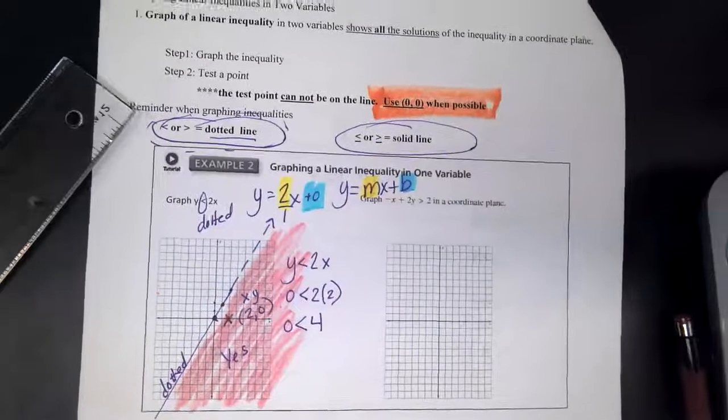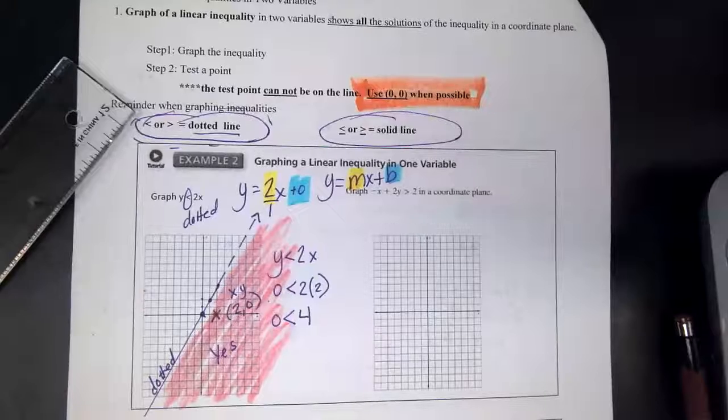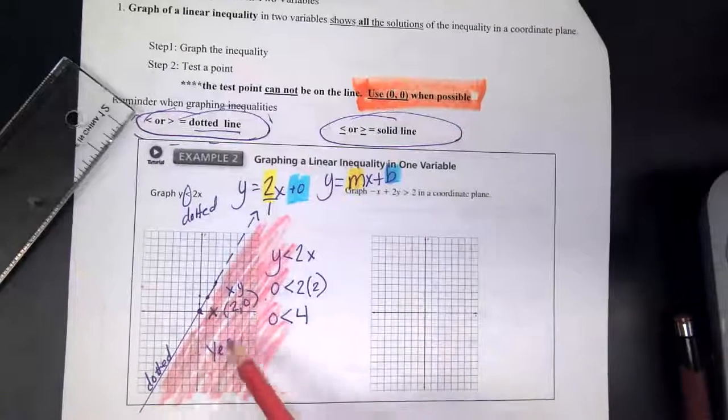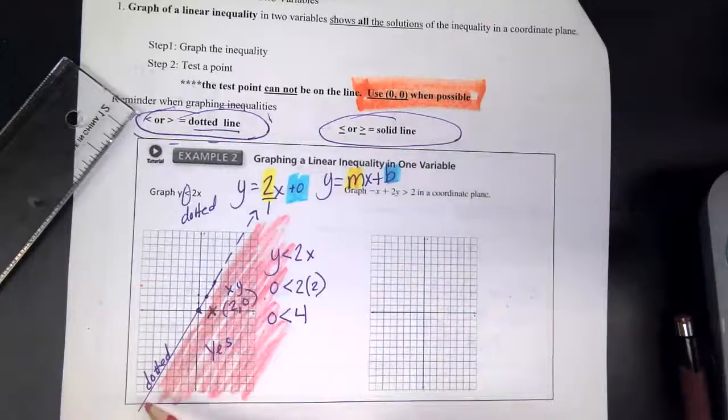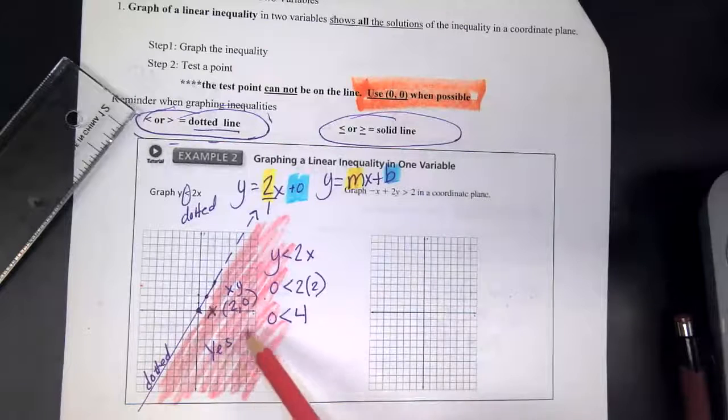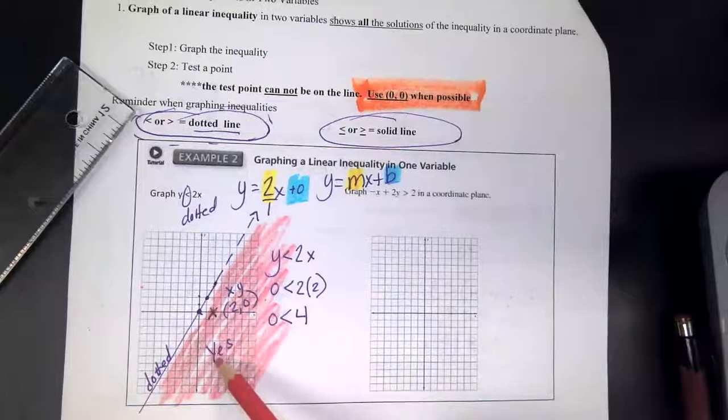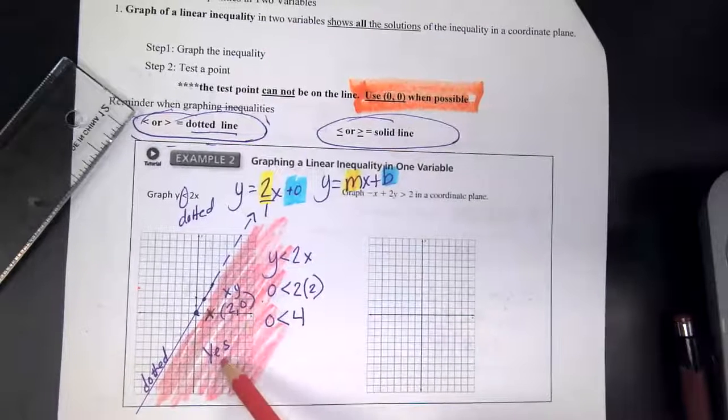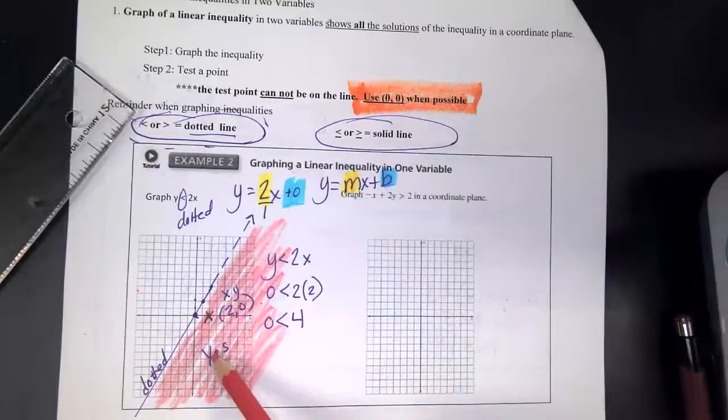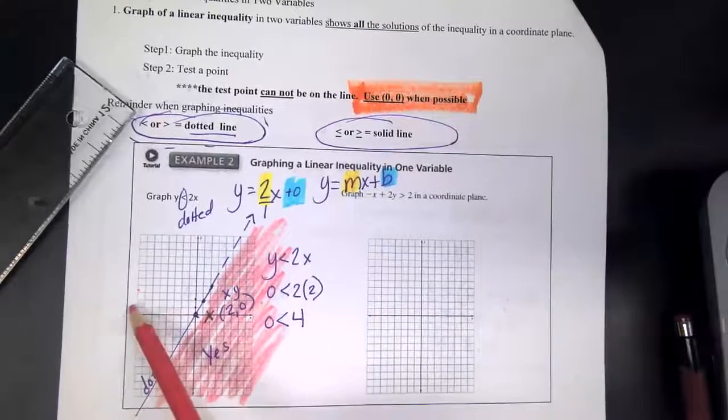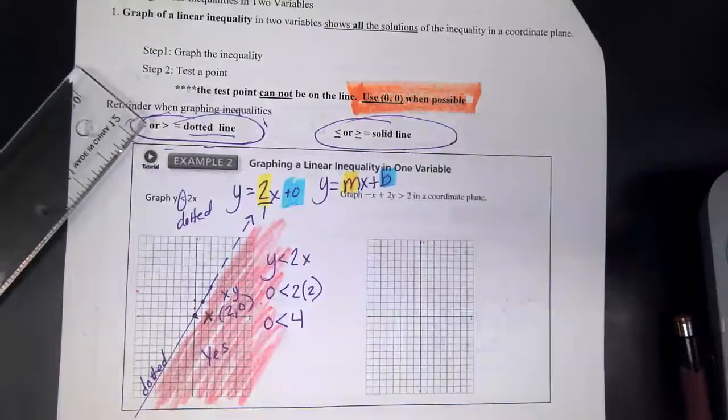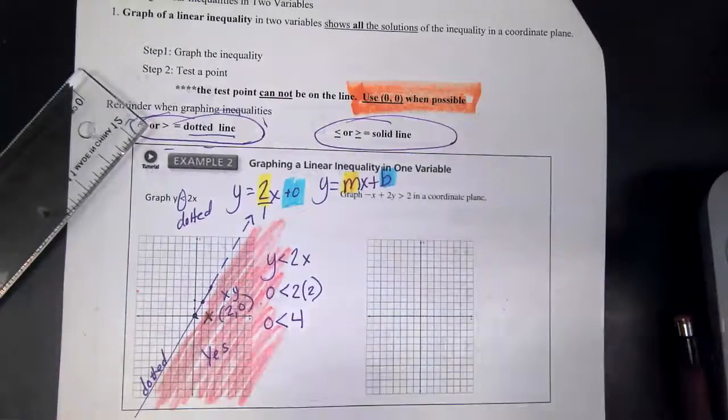So one of my points that I'm going to use, my test point, is zero, zero, if I can. Okay. Okay. Because I need to test one side or the other. Well, this isn't going to work because zero, zero is right on the line. So bummer, bummer on that one.